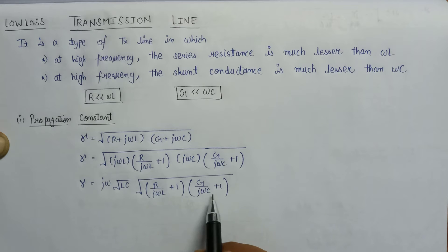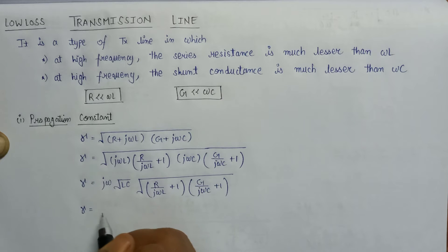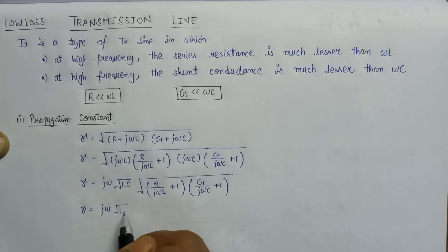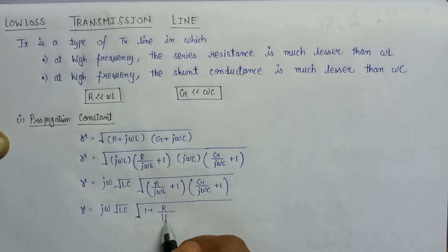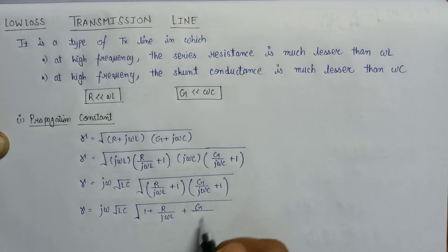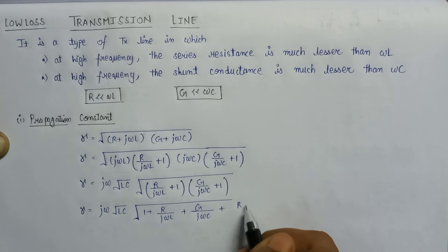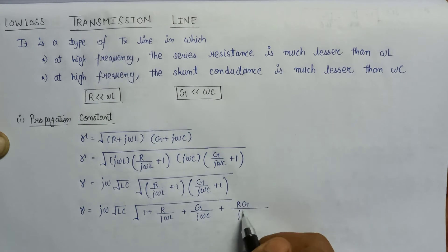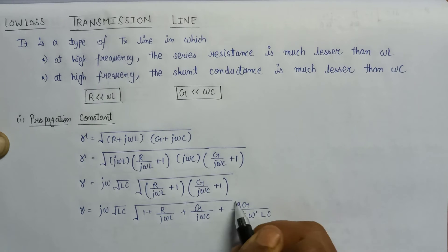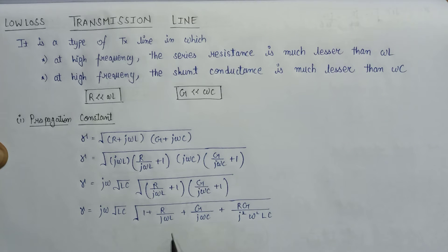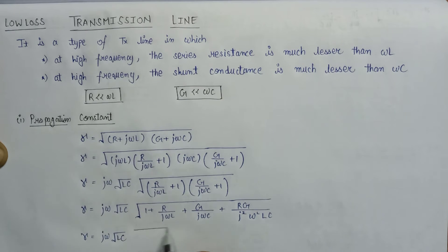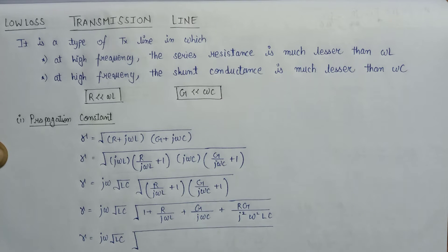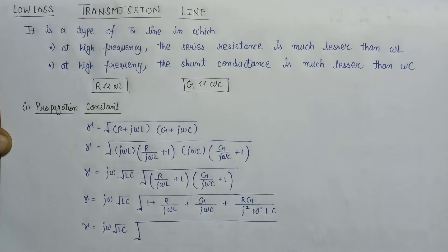Now we multiply the two brackets inside the square root. We need to remove the imaginary term from the denominator by multiplying j with both numerator and denominator for each term. This allows us to simplify the expression further.